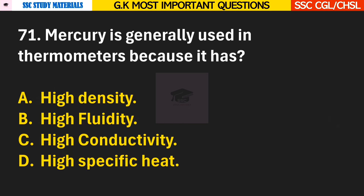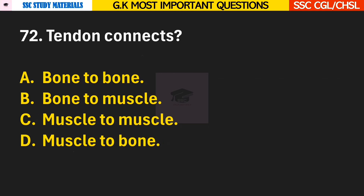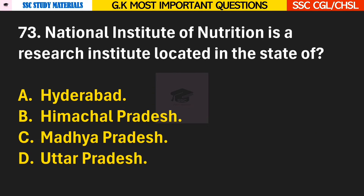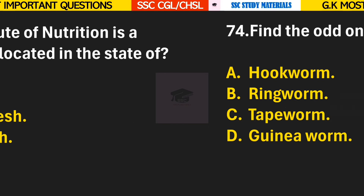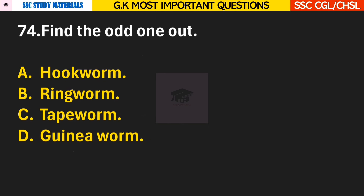Question 71: Mercury is generally used in thermometers because it has? Answer C — High conductivity. Question 72: Tendons connect? Answer D — it connects muscle to bone. Question 73: National Institute of Nutrition is a research institute located in the state of? Answer A — it is located in Hyderabad. Question 74: Find the odd one out? Answer B — Ringworm.